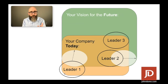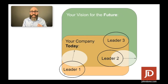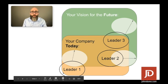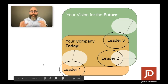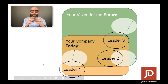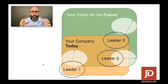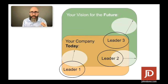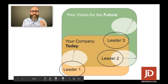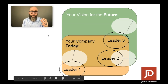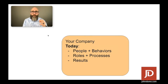Leader two could be making a lateral move with some technical skills to help launch a new line of business. Leader three has the opportunity to truly level up — usually going from a manager of frontline employees to a manager of managers. What's very clear is each one of these leaders has different needs for the different roles they're going to serve in the future.